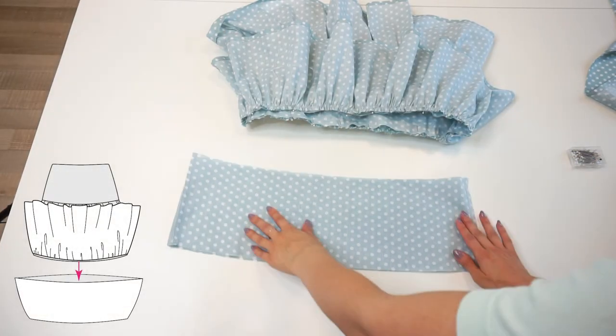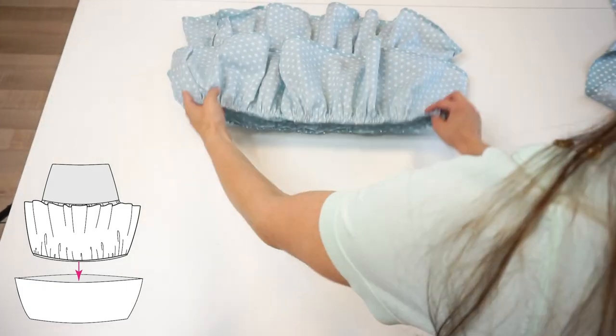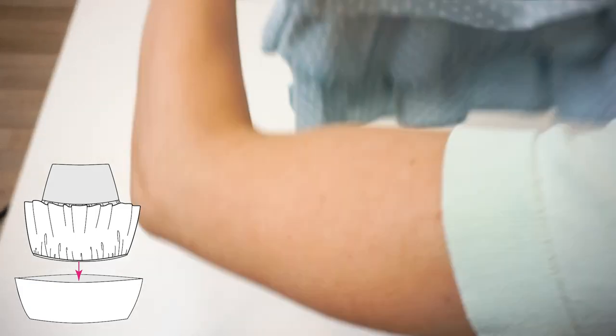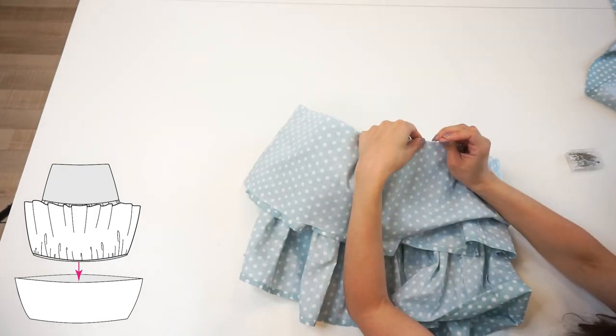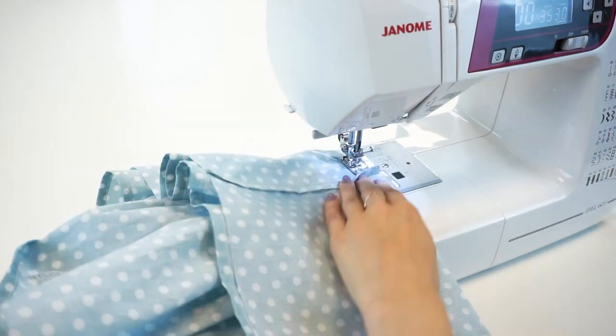Now I am taking the third skirt panel. The upper edge of the third skirt panel has to match the gathered edge of the frill. Sew around.